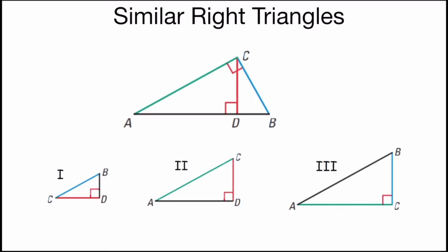They are all similar right triangles, which means that their sides are in proportions. There are a few ways to find missing sides in similar right triangles and that's what we're going to look at.